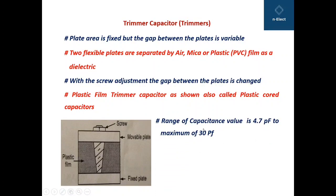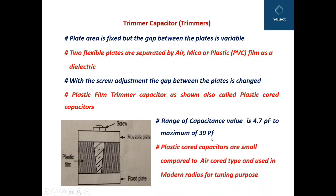The capacitance range of this type of capacitor is from 4.7 pF to a maximum of 30 pF. Plastic cored capacitors are small compared to air cored types and are used in modern radios for tuning purposes — tuning meaning adjusting the stations.